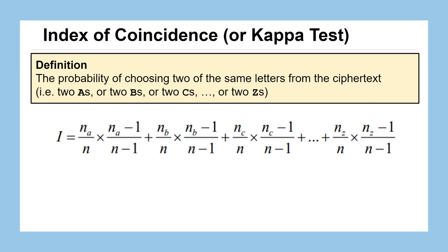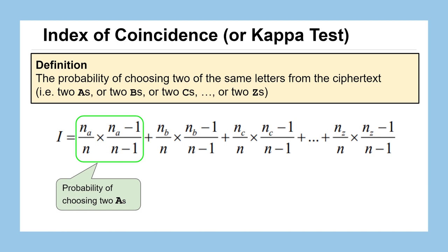That statistic is called the Index of Coincidence. The Friedmans often used the Greek letter kappa when computing this value, so it's often referred to as the kappa test. The definition is that we calculate the probability of two of the same letters being chosen at random from the ciphertext — so two A's, two B's, two C's, and so on down to two Z's.